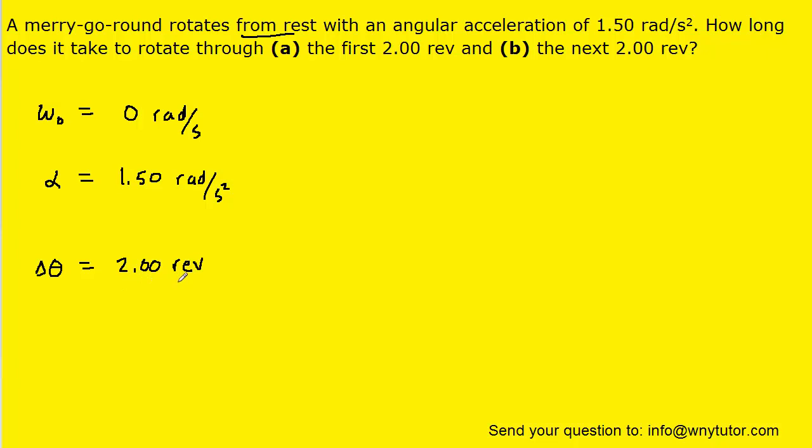Now, we have to convert the two revolutions into the standard unit of radians, so let's take a look at that. We know that one revolution corresponds to two pi radians, and if we set up the conversion in this manner, we can see that the revolutions will cancel, giving us four pi radians.